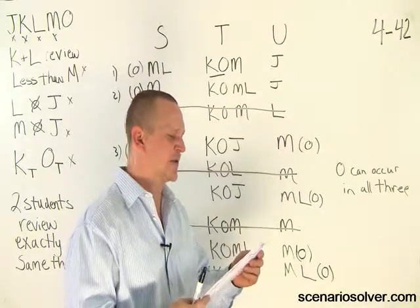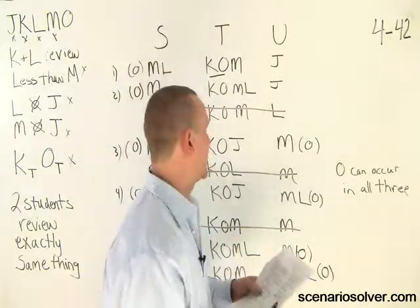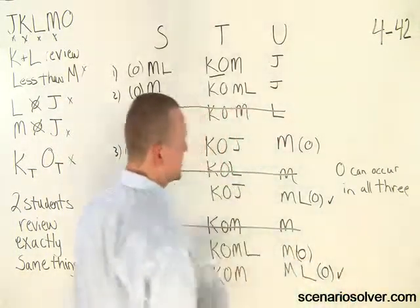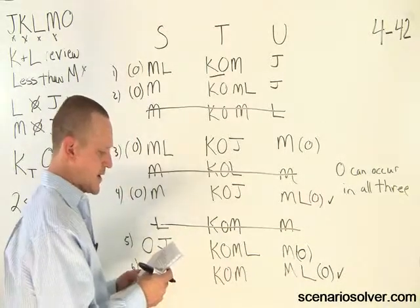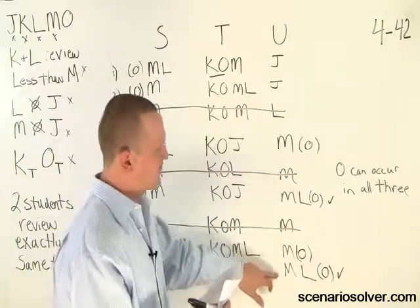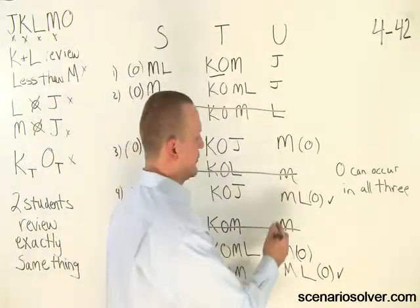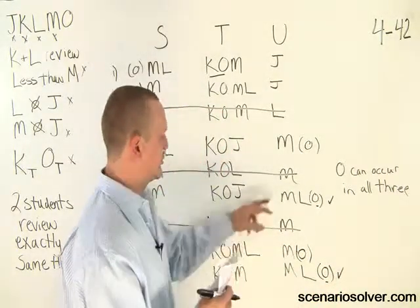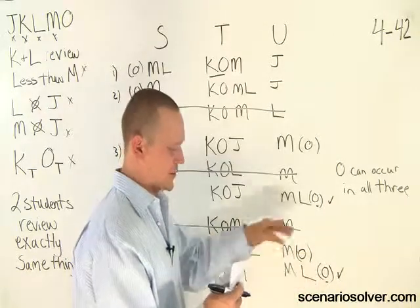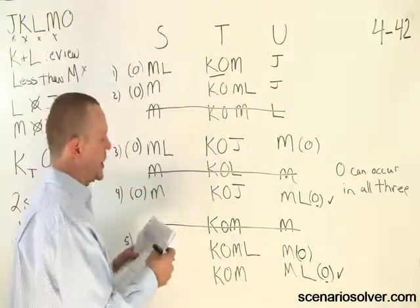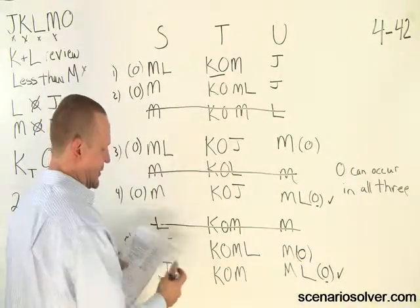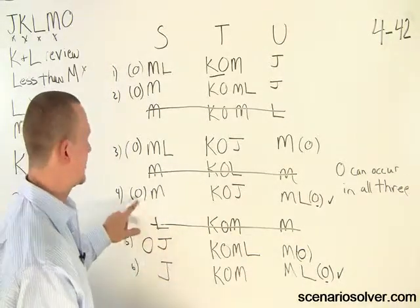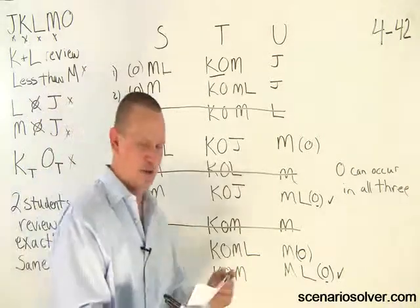Question 21: if exactly three of the students review U, which one of the following could be true? These are the only scenarios where we have three students reviewing U. A — M does not review U. No, M would have to in both of them. B — O does not review U. In order for three of them to go, O would definitely have to review U. C — J reviews U. J could never review U if we have M, L, and O there. D — L reviews T. That cannot happen. E — O reviews S. Well, if we look at this scenario right here, O could review S. That is the answer to the question, which is E.